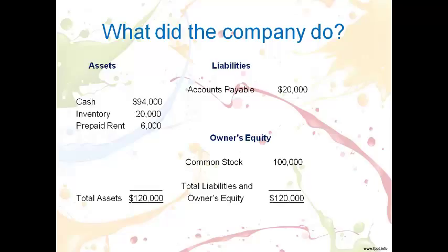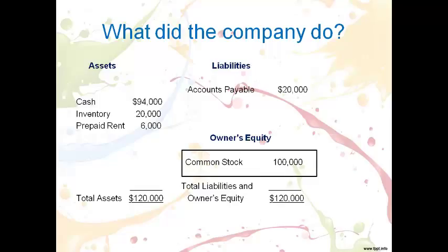Let's look at another balance sheet and determine the transactions that have occurred to date. First, look to see where the company raised their funds — look for long-term debt, long-term payable, or common stock. The $100,000 in common stock indicates that $100,000 was received from investors. Now move to the left side of the balance sheet and see what the company has and determine if cash was paid for assets or not. Prepaid means that $6,000 rent was paid ahead of time, leaving $94,000 in cash, which means inventory was not paid for when it was purchased — there should be a liability: accounts payable. The company owes $20,000 on account for the inventory purchased.